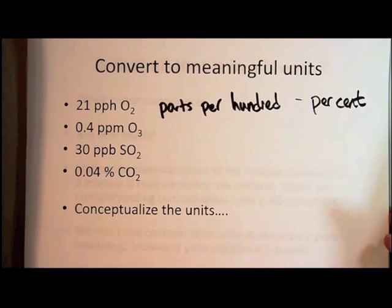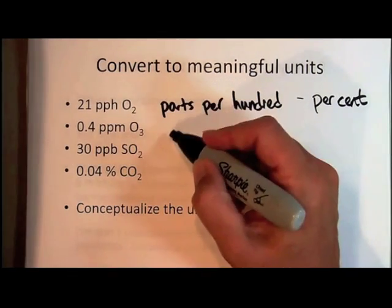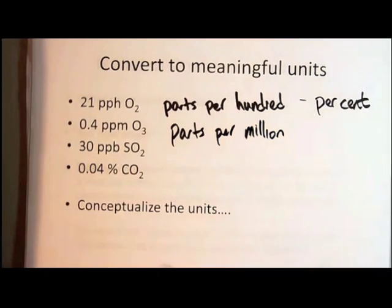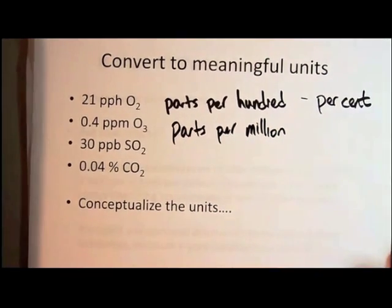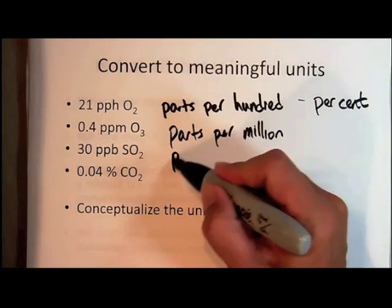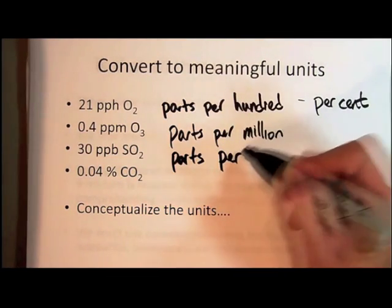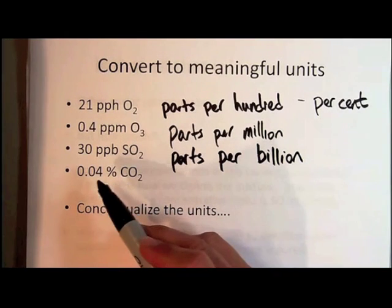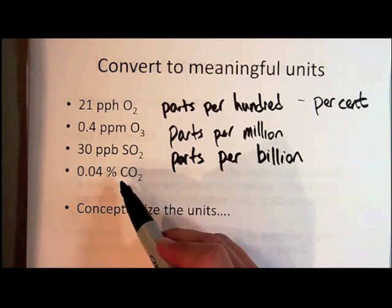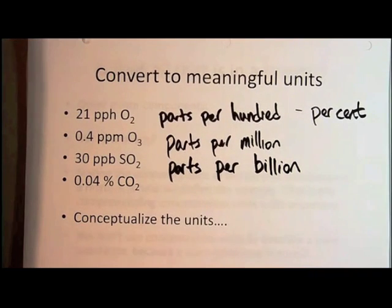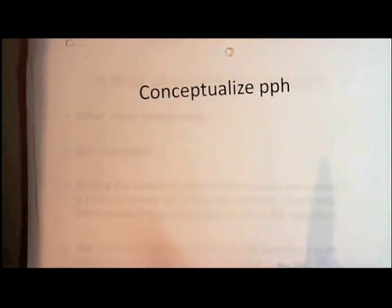What about PPM? 0.4 PPM ozone. PPM stands for parts per million. Parts per million. And so that means that in air, there are 0.4 parts per million ozone. What about PPB? That's parts per billion. And down here is percent, which would be the same as parts per hundred or percent carbon dioxide. So we want to be able to conceptualize these units.